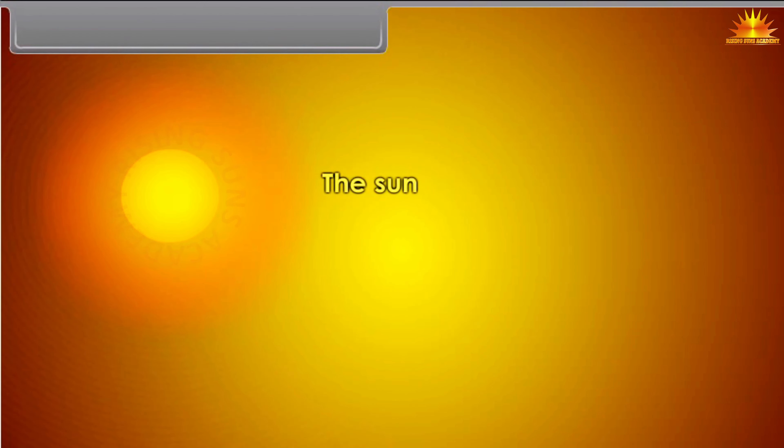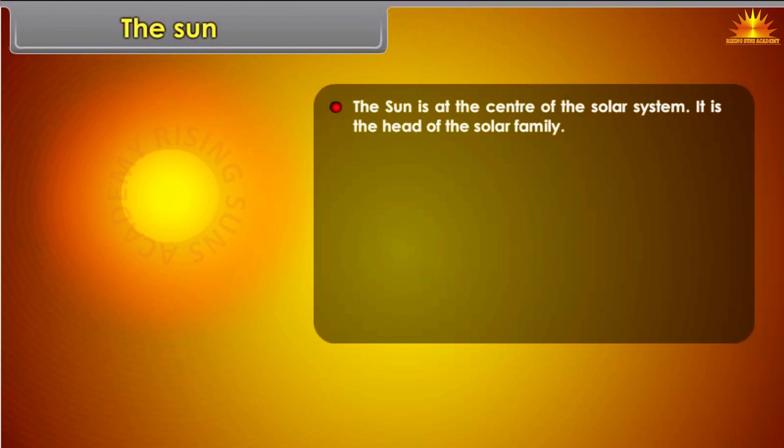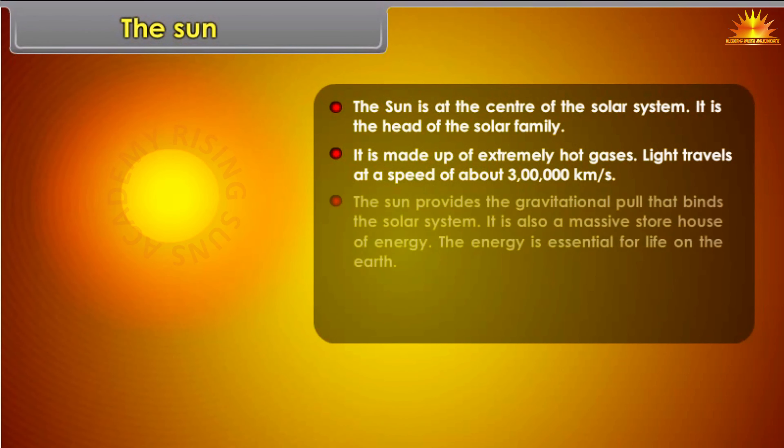The Sun: The sun is at the center of the solar system. It is the head of the solar family. It is made up of extremely hot gases. Light travels at a speed of about 3 lakh kilometers per second. The sun provides the gravitational pull that binds the solar system.